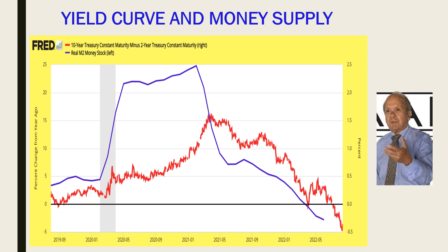The yield curve — the red line, which is now inverted at almost minus 41 to 42 basis points — is closely related to the growth of the money supply. When the yield curve steepens, it reflects growth in liquidity. When the yield curve flattens and then inverts, it reflects a slowdown and contraction in the growth of the money supply. The fact that the yield curve is still inverted suggests that liquidity is likely to be contracting and very poor, which relates to the markets I'll cover later.